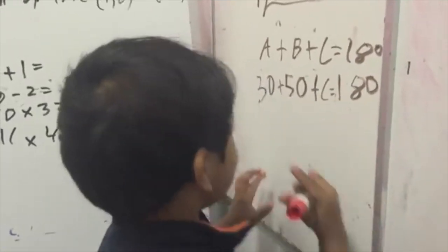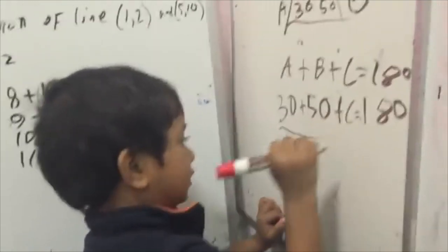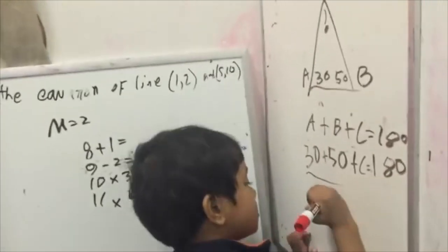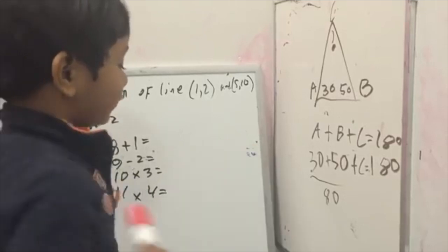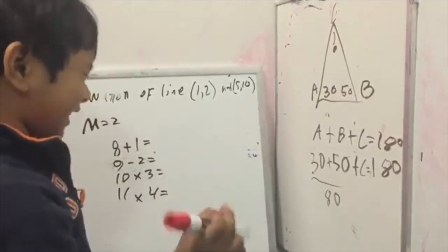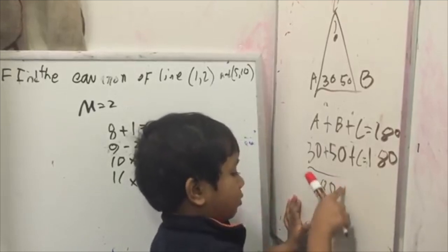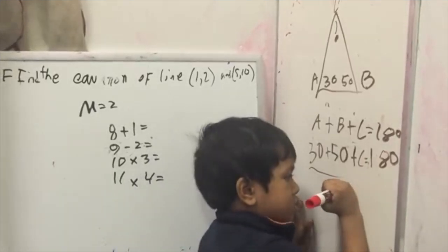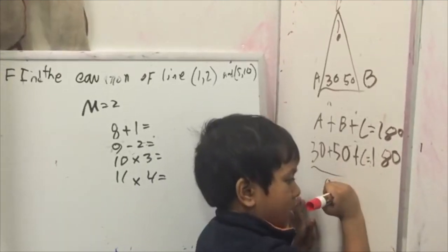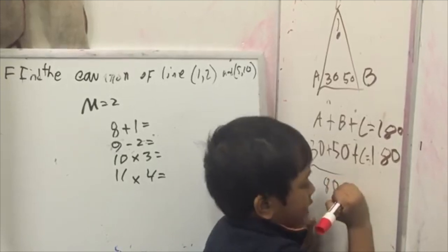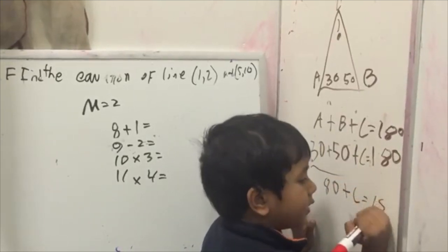So we need 30 plus 50, which is 80. So 30 plus 50 is the right answer, 80. So 80 plus C is 180.